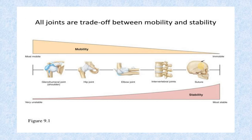So the more movement a joint has, the less stable it will be. More mobility equals less stability, and less mobility equals more stability.